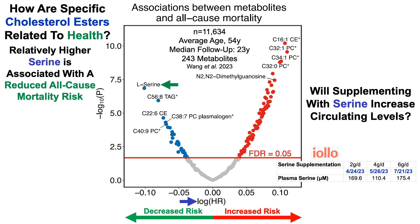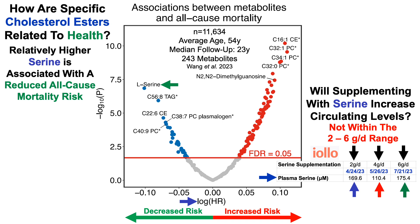I currently have data for three tests using IOLO's at-home metabolomics kit, where I supplemented with two, four, and six grams of serine per day prior to the April, May, and July 2023 tests. At two grams per day, plasma serine was about 170 micromolar; at four grams it went down to 110 micromolar; and at six grams there was a very small increase to 175 micromolar. This suggests serine supplementation may not reliably increase circulating serine levels, at least in the two to six gram per day range.